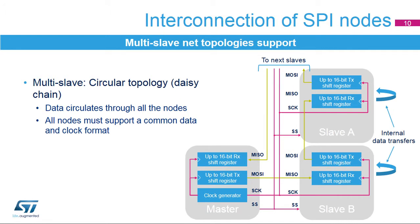Another multi-slave configuration is the circular topology, where the inputs and outputs of all the nodes are connected together in a closed serial chain. A common slave select signal is used for all the nodes as communication occurs at the same time. All nodes must have the same data and clock format configuration. Usually, the internal transmit and receive shift registers of a node are physically separated, so the internal data transfers have to be handled by software in this circular mode. The master node has to pace the internal data transfer accurately enough to remain synchronized with the other external data transfers.